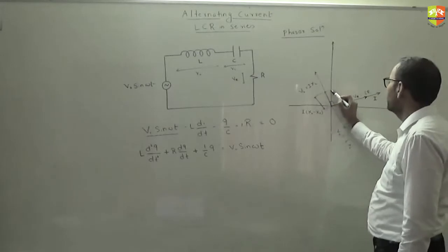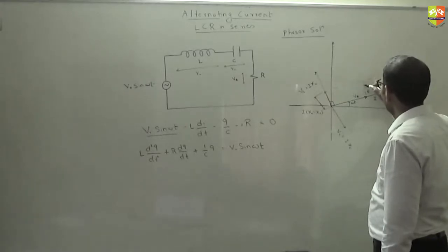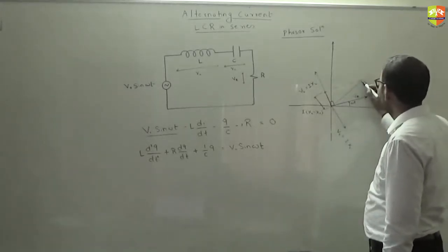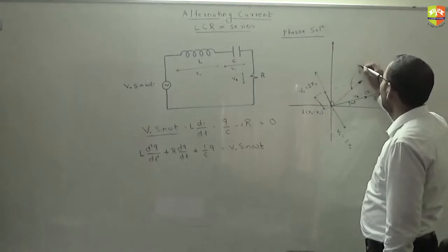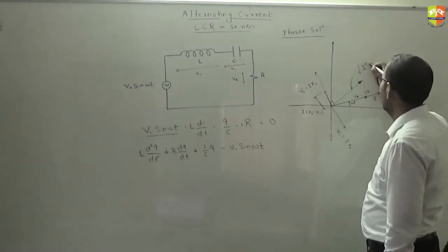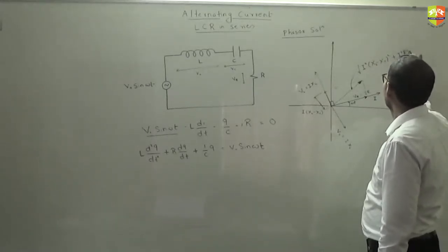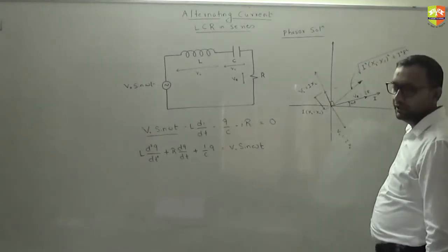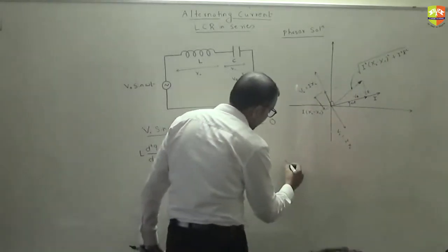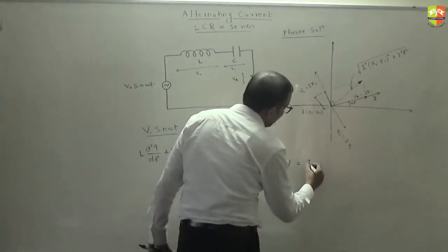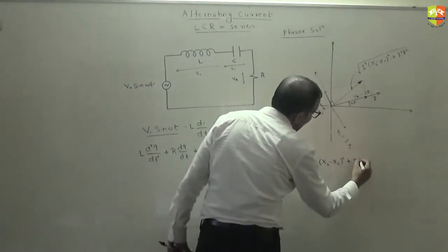Then what do you do? You have added these two. Now you have to add the third vector. You complete the parallelogram. And this is your third vector, sum of all three. The magnitude of that will be I times root of XL minus XC whole square plus R square. This is the magnitude.